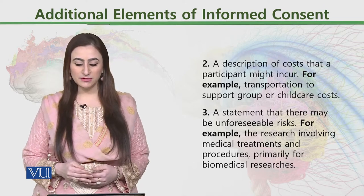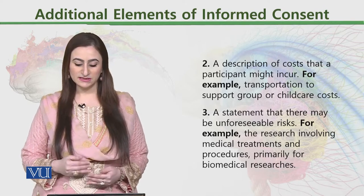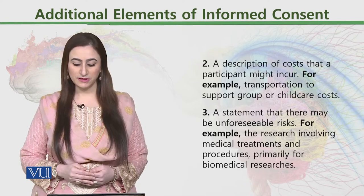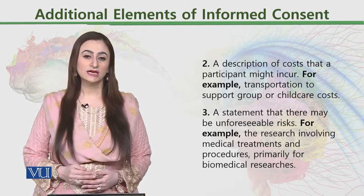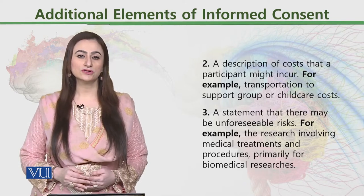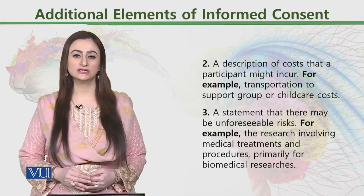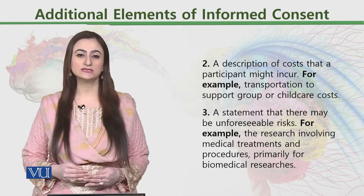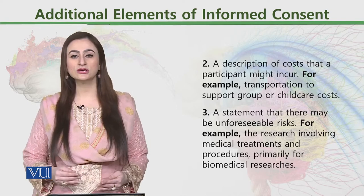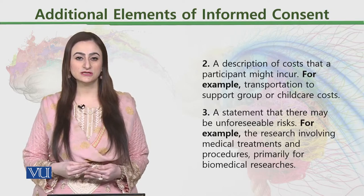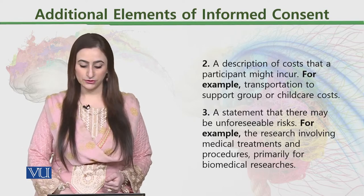A statement about foreseeable risks. For example, in research involving medical treatments and procedures — primarily for biomedical researchers — this is not necessarily true for social science researchers, but for biomedical researchers there are certain situations where the need for biomedical treatments may arise, and the description of those risks is also very important to include in the informed consent.